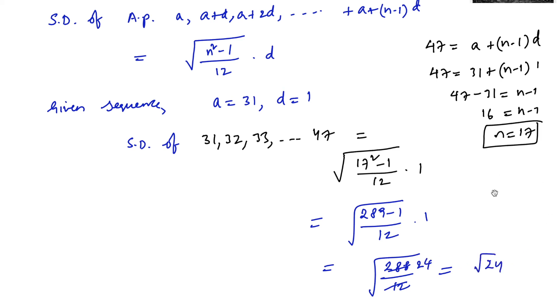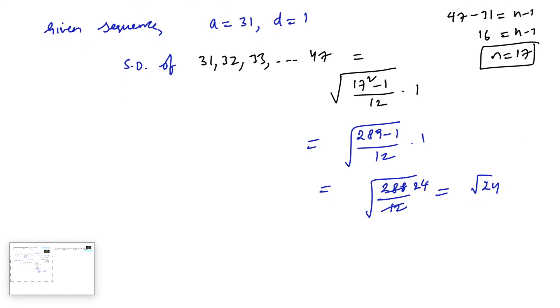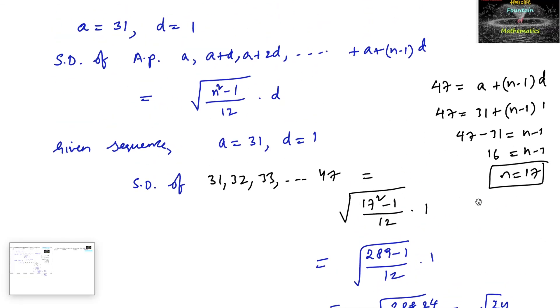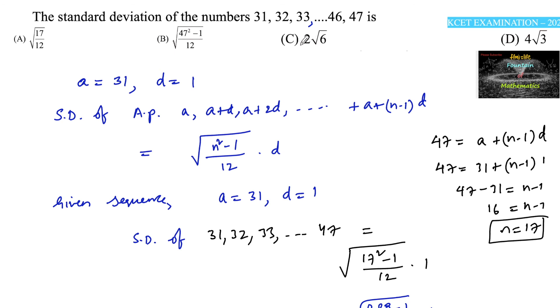And square root of 24 on simplifying we can write 2 root 6. So we can go with answer 2 root 6 is the standard deviation, option C is the right answer.